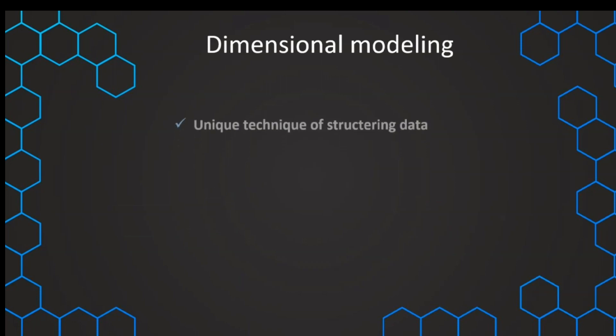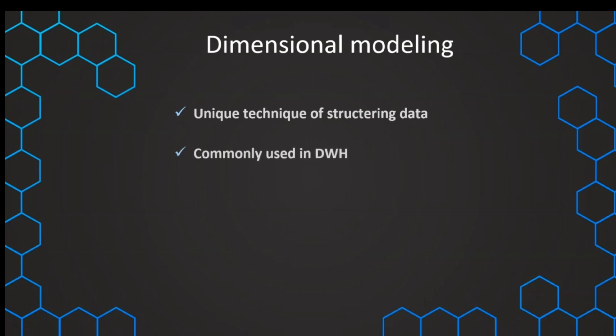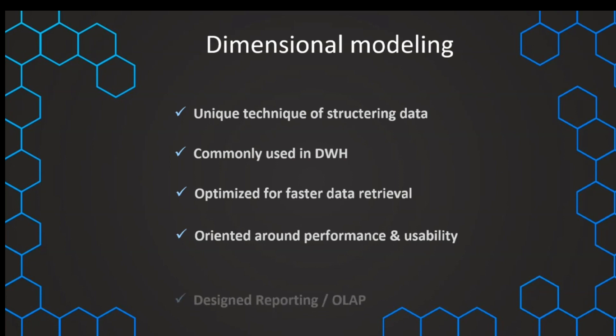Dimensional modeling refers to a unique technique that is used in a data warehouse to structure our data. And it is optimized for the purpose of a data warehouse, that is to have fast data retrieval. It's oriented around performance and usability. These are the things that we usually want to have very high for reporting and OLAP use cases, and that's why we want to use those dimensional models in our data warehouse.